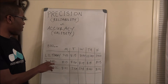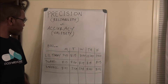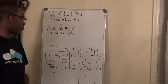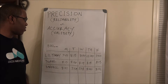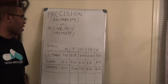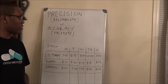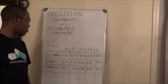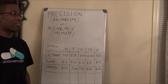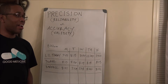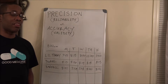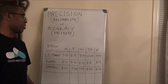To further explain the difference, I always like to use a classroom setting. Let's say class starts at 8 o'clock. Little Timmy, on Monday, shows up at 7:45. Tuesday, he shows up at 8:15. Wednesday, he shows up at 8:30. Thursday, he shows up at 12 o'clock. And on Friday, he shows up at 7:50.